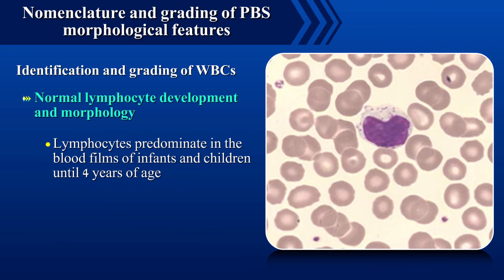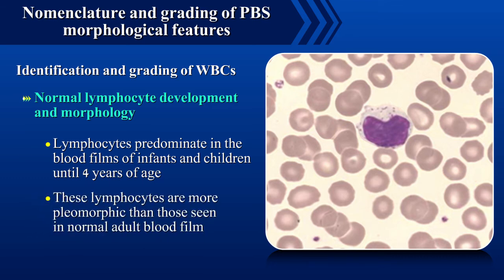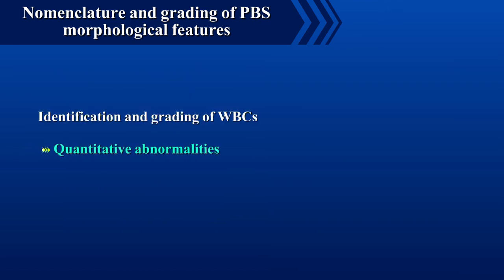Lymphocytes predominate in the blood films of infants and children until 4 years of age, and these lymphocytes are more pleomorphic than those seen in normal adult blood films. Coming to quantitative abnormalities.